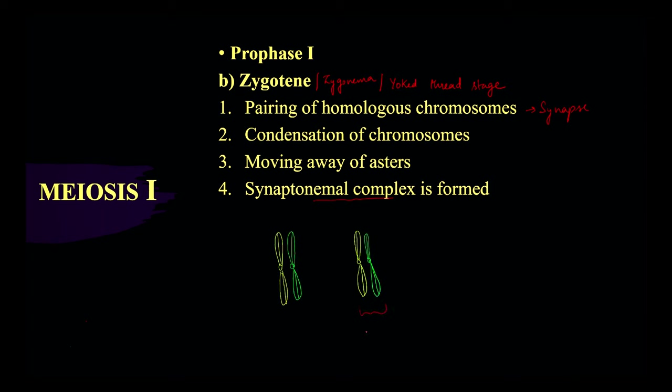The pairing is taking place between homologous chromosomes — one chromosome is from one parent and one from the other parent (father and mother). There will be a synaptonemal complex, which is a bond-like structure between the two homologous chromosomes.